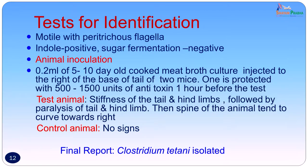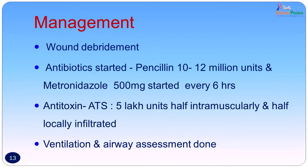No sensitivity testing was done as Clostridium are not known to develop resistance. The patient was admitted to the ward; wound debridement was done. Antibiotics were started — penicillin 10 to 12 million units and metronidazole 500 mg every 6 hours. Antitoxin was given as ATS 5 lakh units, half intramuscularly and half locally infiltrated. Since the patient was presenting with local tetanus, ventilation and airway assessment was done, but the patient was not intubated — just observed.